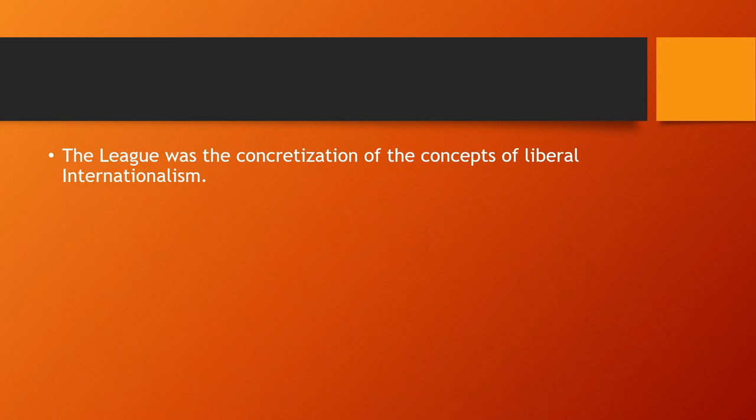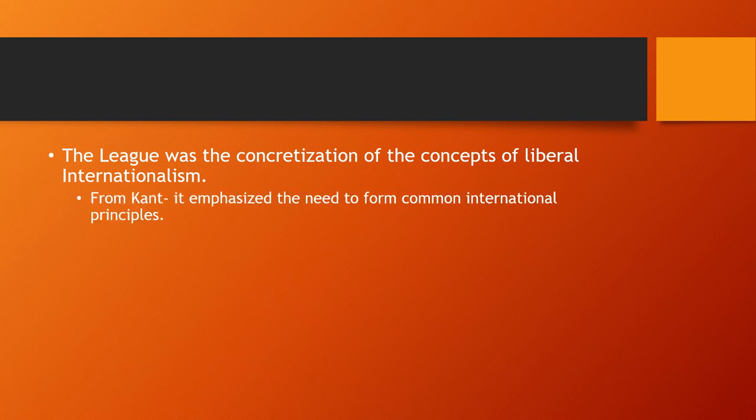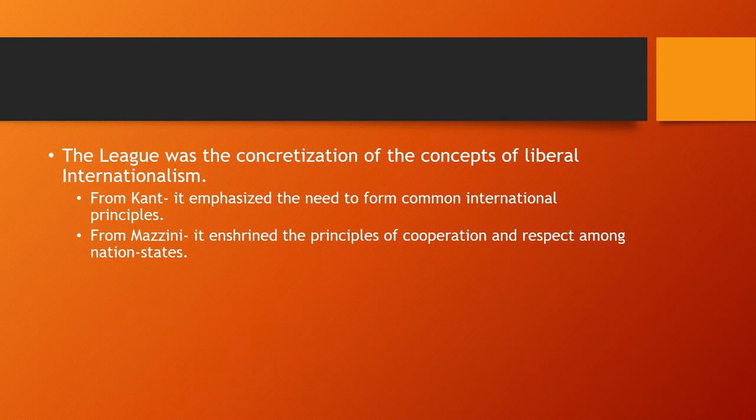The League was the concretization of the concepts of liberal internationalism. From Kant, it emphasized the need to form common international principles. From Mazzini, it enshrined the principles of cooperation and respect among nation-states. From Wilson, it called for democracy and self-determination.